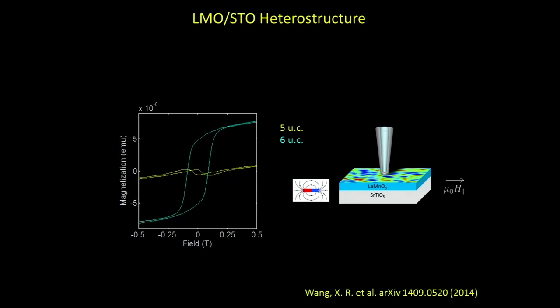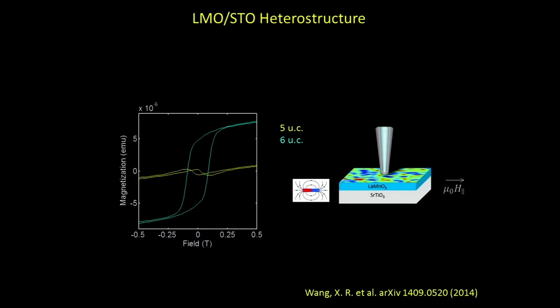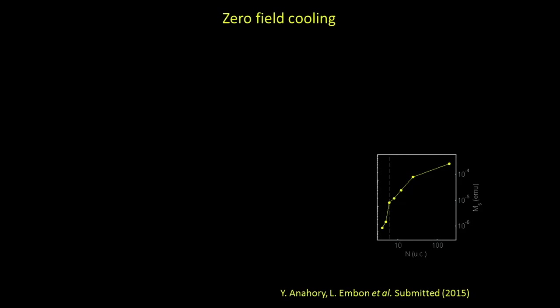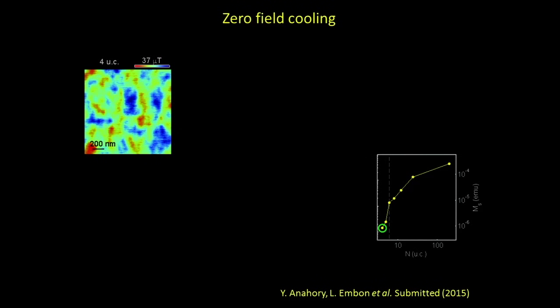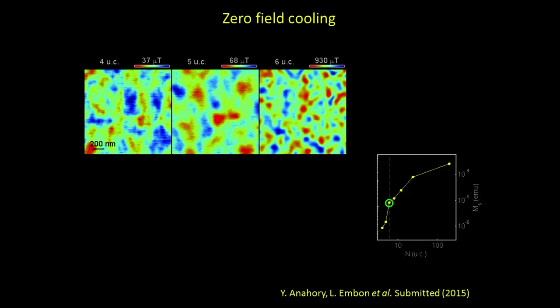What I'm showing here is the saturation magnetization as a function of the number of LMO layers — you can see it jumps dramatically. The SQUID-on-tip images show: for four unit cells, some faint magnetic structure; for five unit cells it grows a bit; and this is consistent with antiferromagnetic domains emitting some stray fields. But when you add the one extra layer, the amplitude rises by more than an order of magnitude. Interestingly, what you observe on a 5×5 millimeter sample also seems to be observable on the 1.5×1.5 micron scale.